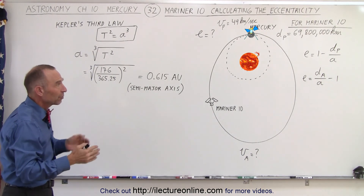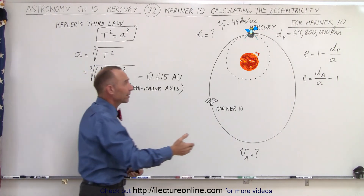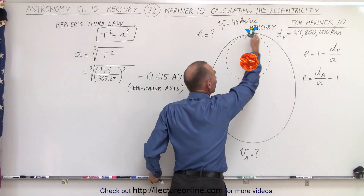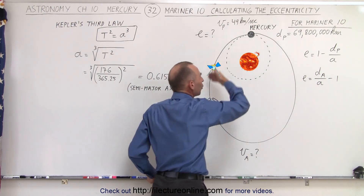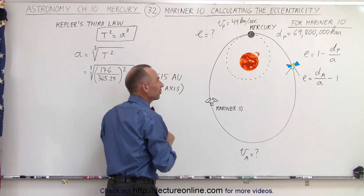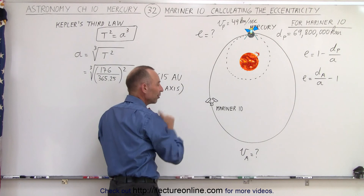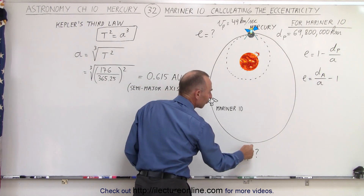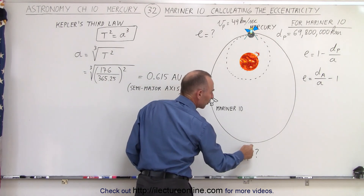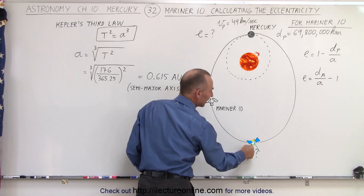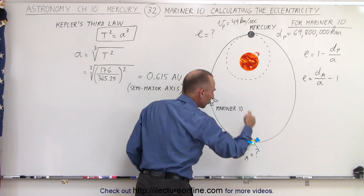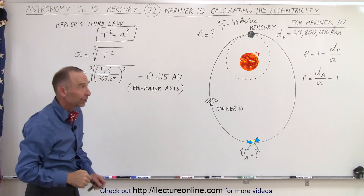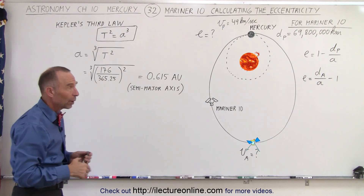What we're going to do now is calculate the ellipticity or the eccentricity of the orbit of Mariner 10, and from that we should be able to calculate the velocity for Mariner 10 at the position when it's farthest away from the Sun at aphelion.